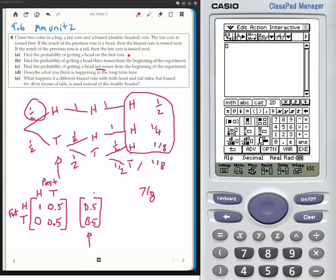This is the initial state. This is what happens on the first toss. This is applying the transitional matrix once. This is applying the transitional matrix twice. So if I do that to the power of 2, my answer should give me 7 eighths and 1 eighth.